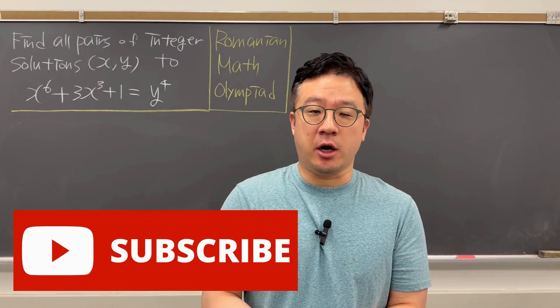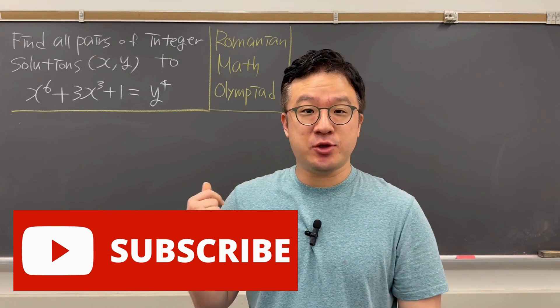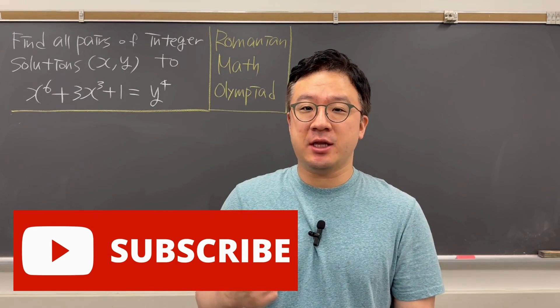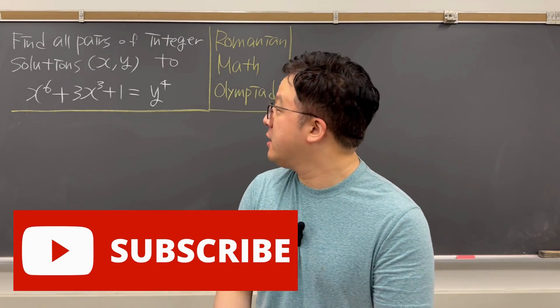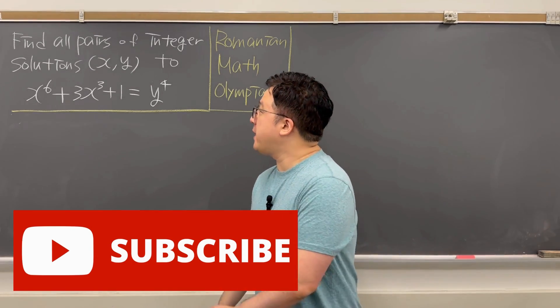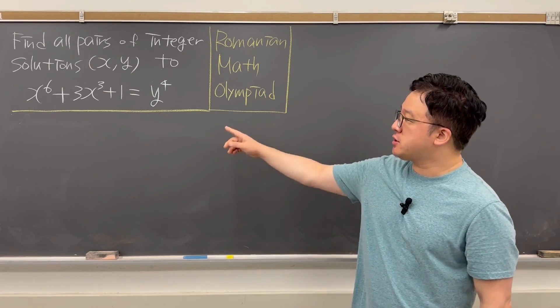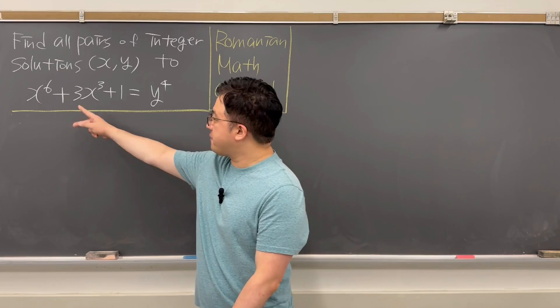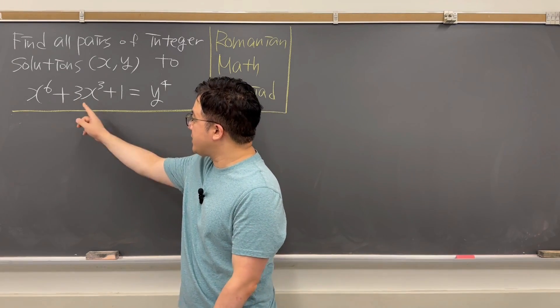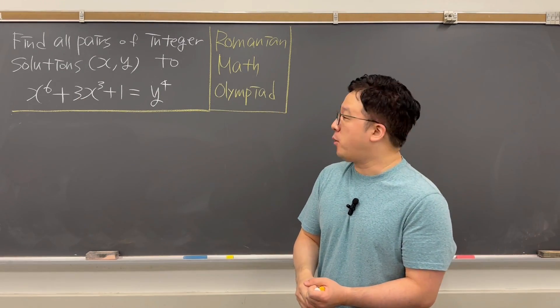Hello guys, welcome back. PK here. So in this video, we're going to be solving this interesting Diophantine equation from the Romanian Math Olympiad. The question is: find all pairs of integer solutions of x and y to x to the power of 6 plus 3x cubed plus 1 is equal to y to the power of 4.